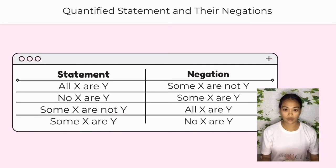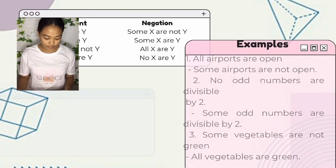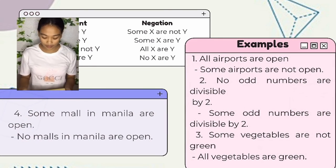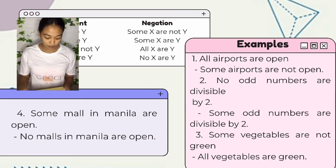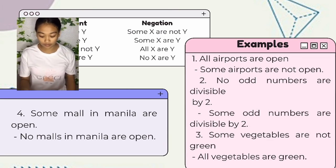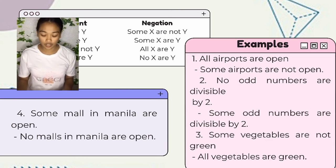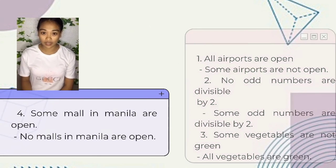Here are four examples of statements and their negations. First: 'No airports are open' — negation: 'Some airports are not open.' Second: 'No odd numbers are divisible by two' — negation: 'Some odd numbers are divisible by two.' Third: 'Some vegetables are not green' — negation: 'All vegetables are green.' Fourth: 'Some malls in Manila are open' — negation: 'No malls in Manila are open.'